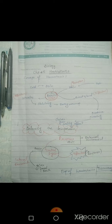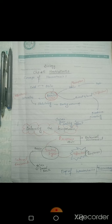So for homeostasis, thermoregulation is the best example. To recap: the brain works as a control system. The receptors — your skin cells in the external environment — send messages to the brain. The brain detects changes and produces responses. These responses include shivering when it is cold and sweating when it is warm.